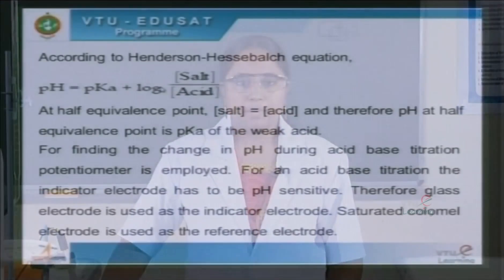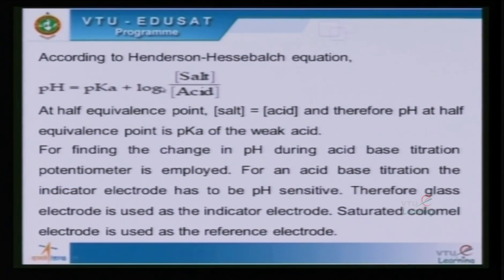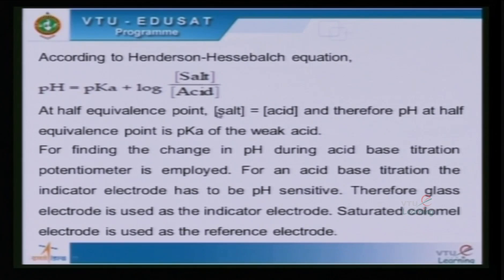According to the Henderson-Hasselbalch equation, pH = pKa + log([salt]/[acid]). At the half equivalence point, the concentration of salt equals the concentration of acid, and therefore the pH at the half equivalence point equals the pKa of the weak acid.